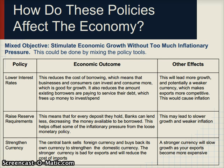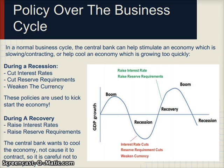Central banks typically enact these policies over the business cycle — a period of growth in which the economy accelerates, then slows, potentially contracts, and then accelerates again in boom and recession periods. During a recession, where growth slows and inflation is low, the central bank will typically cut interest rates to make borrowing cheaper, cut reserve requirements to increase money supply, and potentially weaken the currency to stimulate exports.